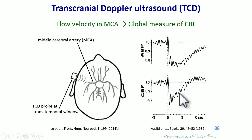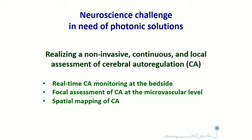This is a typical result for the response of blood flow to a transient change in mean arterial pressure. The limitation of Doppler ultrasound is that it provides a global measurement of the brain, at most with lateral discrimination for the two hemispheres. So this is the neuroscience challenge where optics can help: realizing a non-invasive, continuous, and local assessment of cerebral autoregulation.